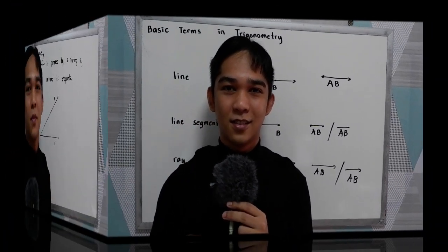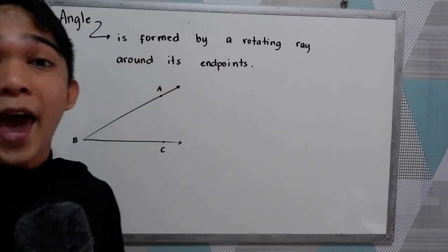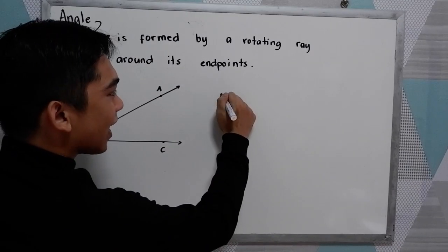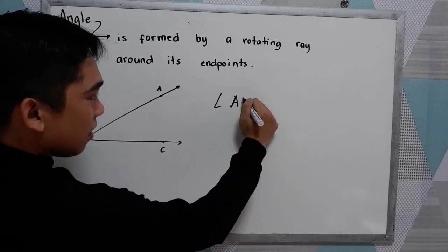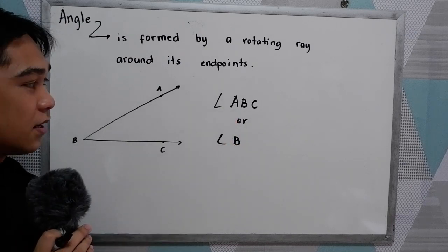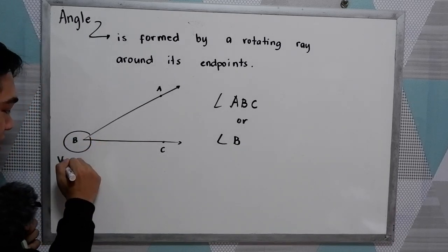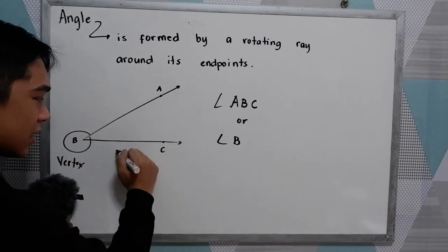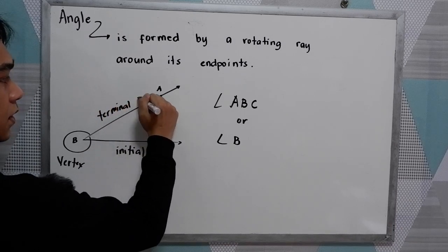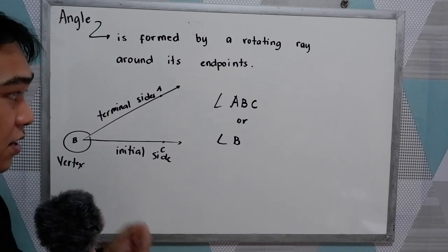Now let us proceed to another term, which is the angle. An angle is formed by a rotating ray around its endpoint. Let's say we have this illustration. So we can name this as angle ABC, or simply angle D. We can name it using three points, or simply in capital letter which is the vertex. So we have here the vertex, this is what we call the initial side, and this one is the terminal side. So that's the angle and its parts: the initial side, the terminal side, and the vertex.